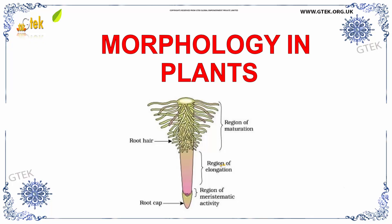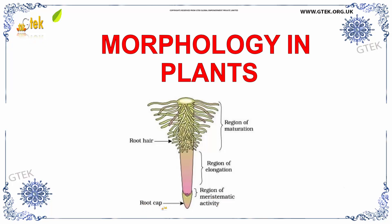You can see the root here. It has various regions. This region is called maturation and this is called elongation. Below it is called meristematic activity. You can see the root cap here and this portion is called root tip.